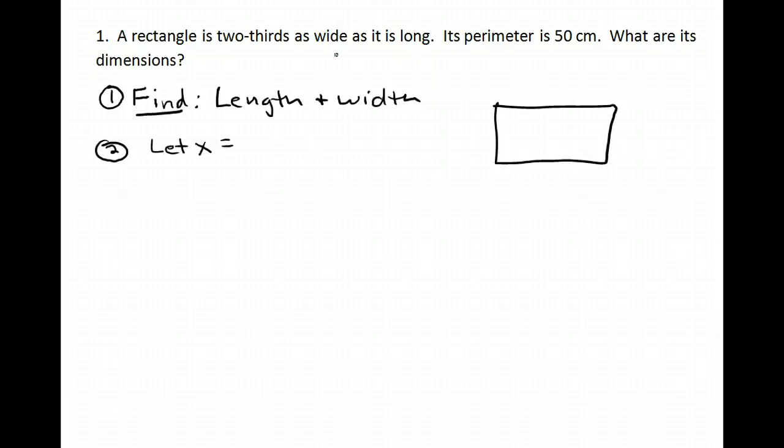You need to start by letting x be what you know the least about. I don't know anything about how long it is, but I know that it's two-thirds as wide as it is long. So I'm going to start with what I don't know anything about. In this case, that will be the length. So I'm going to let x equal the length and I'm going to put an x over here on my picture.